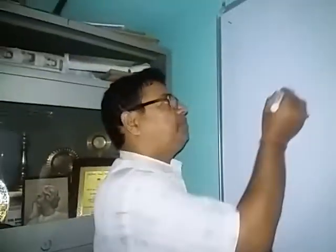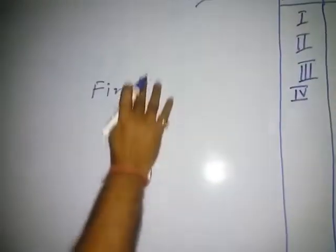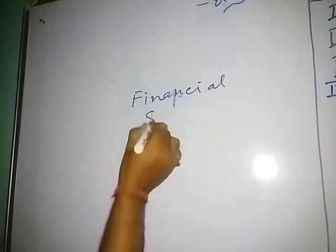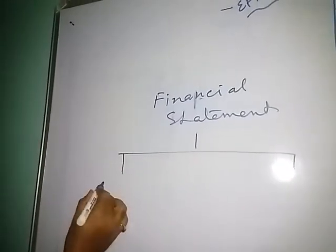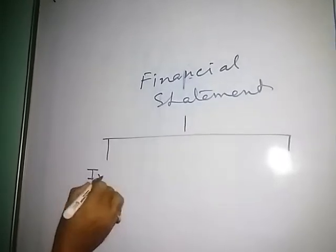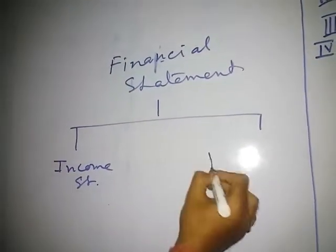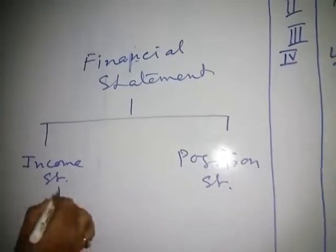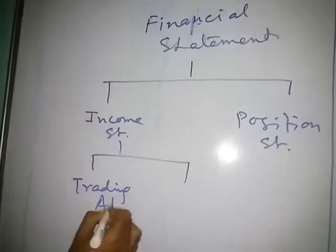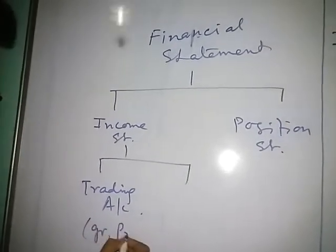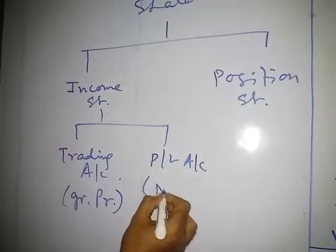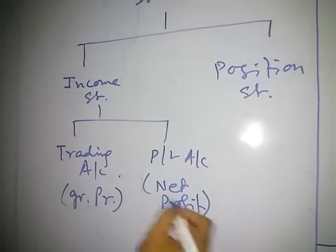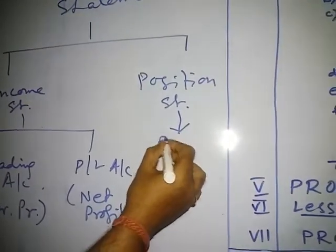You can remember that financial statements — your final accounts — whatever we prepared in Class 11, that was an income statement and a position statement. The income statement was divided into two parts: the trading account, through which gross profit or gross loss was calculated, and the profit and loss account, through which net profit or net loss was calculated. The position statement means the balance sheet.